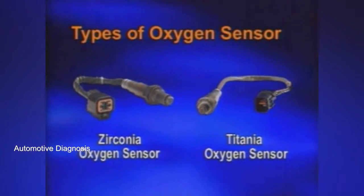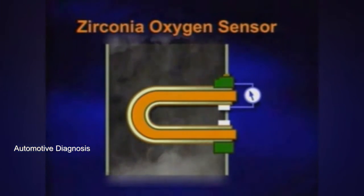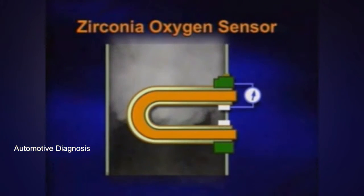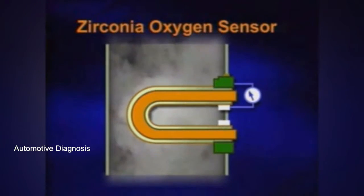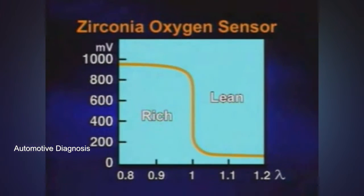There are two types of oxygen sensors: the zirconia oxygen sensor and the titania oxygen sensor. The zirconia oxygen sensor generates a small voltage depending on the exhaust gas condition. The normal voltage range is 0.2 to 0.8 volts. 0.2 volts indicates a lean mixture and a voltage of 0.8 volts indicates a richer mixture.